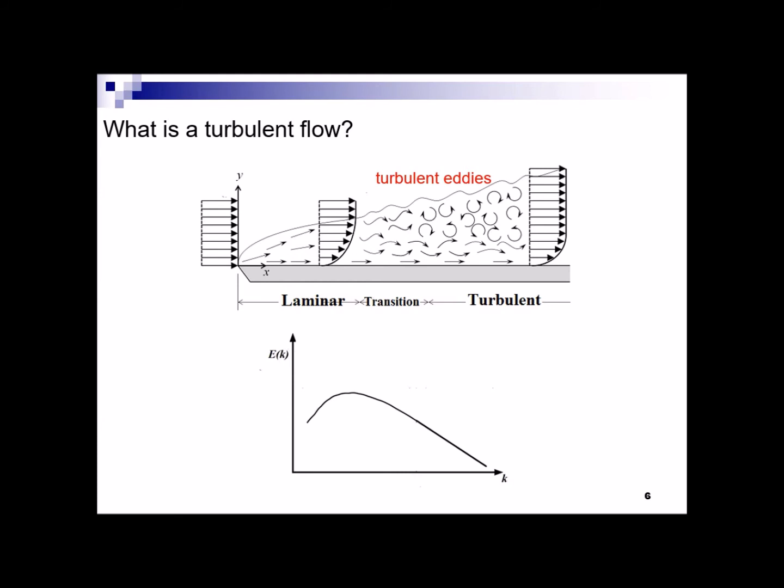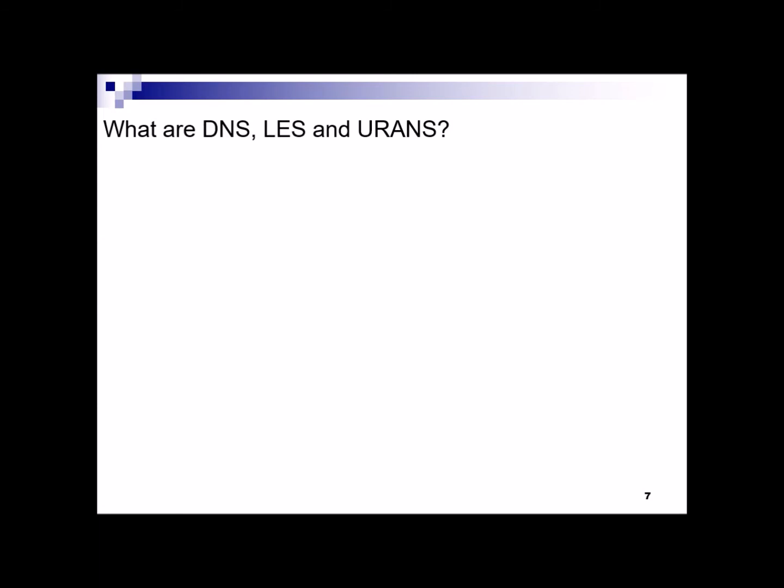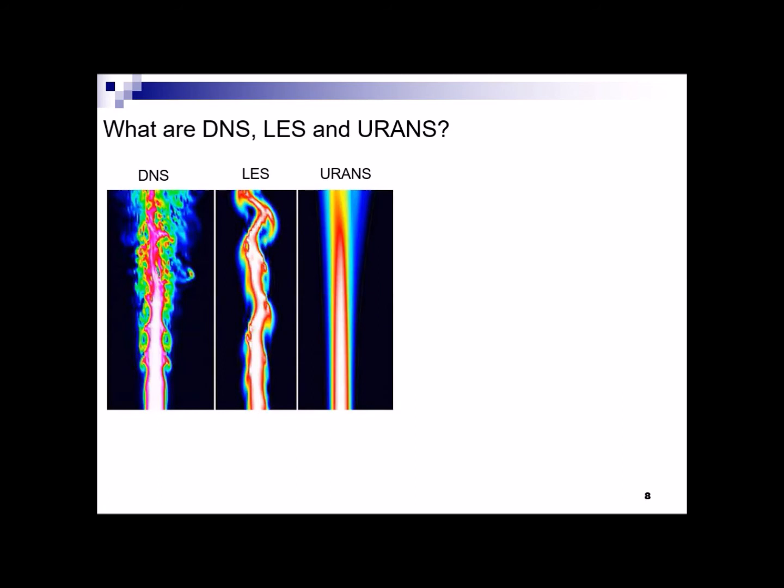Now let's answer this question: what are DNS, LES and URANS? They are in fact methods by which CFD represents the turbulent flow, however with different levels of accuracy. To understand what that means, let's look at this picture which shows the prediction provided by DNS, LES and URANS for a turbulent jet.